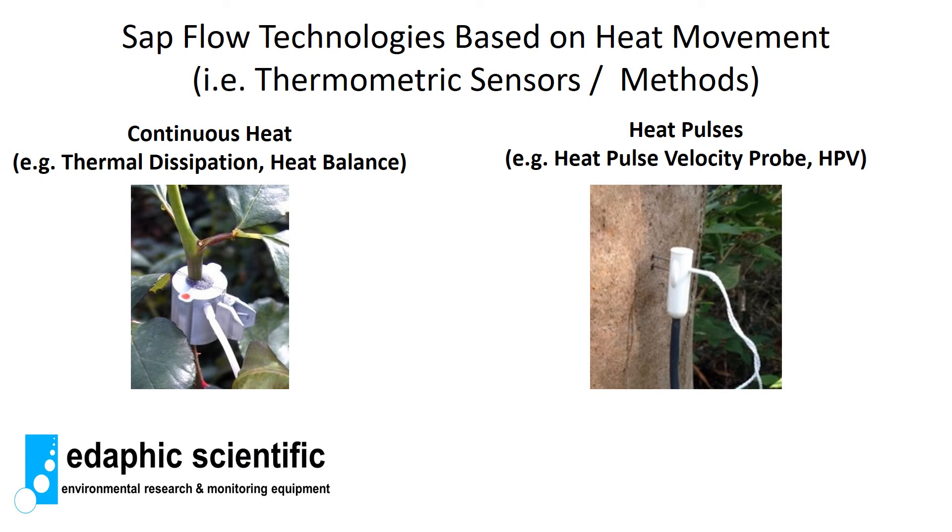Most SapFlow technologies are based on heat movement within plants. The sensors are based on heat and we call these thermometric sensors. There are two broad categories of thermometric sensors: continuous heat and heat pulse sensors. Continuous heat sensors are things such as thermal dissipation probes, Granier probes, or heat balance probes.